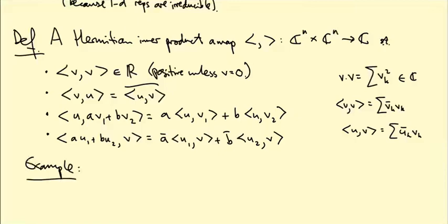Which is <U,V> equals sum from k equals 1 to n of U bar_k V_k. Okay, so this is the standard Hermitian inner product on C^n.